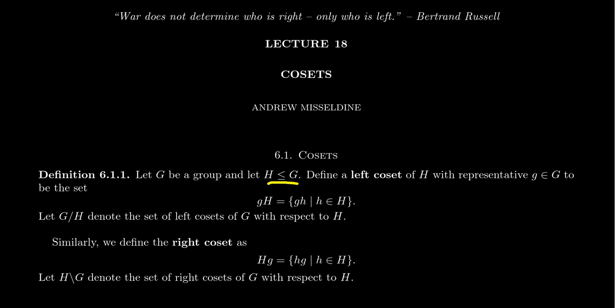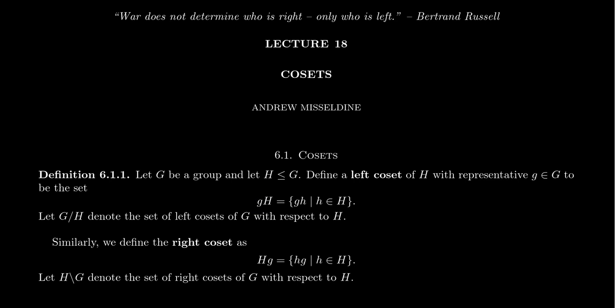Why is it so important that H is a subgroup for the following definition? Given a subgroup H of a group G, we define a left coset of H with representative little g inside the group as the following set. This will be denoted little g times H, and it consists of all products of the form little g times little h, where little h is allowed to vary over the elements of the subgroup H.